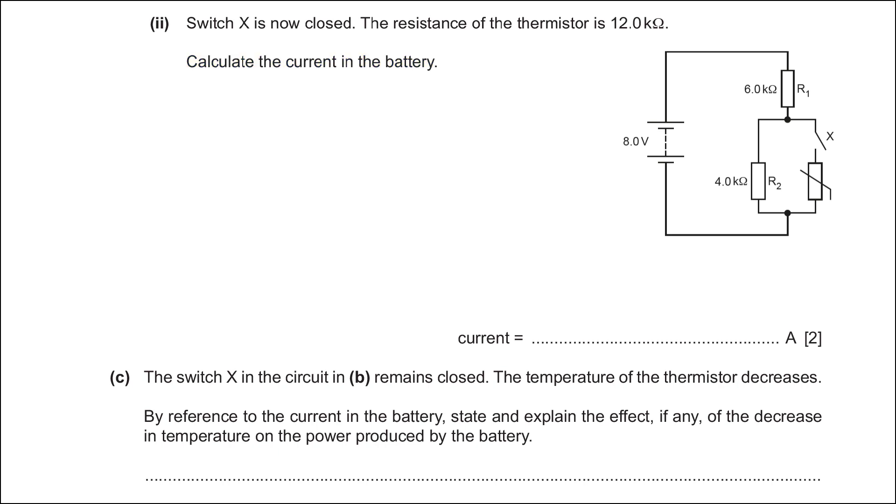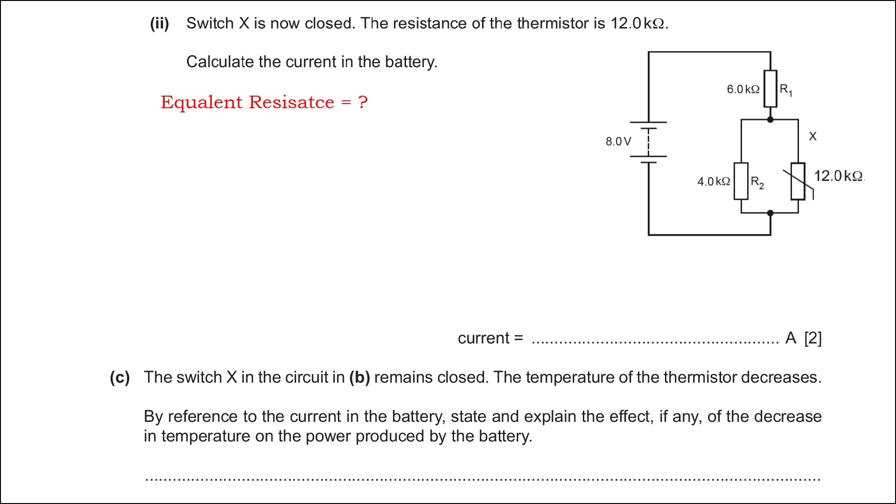When the switch X is closed, then circuit is reduced as shown. To calculate the current, first we have to find the equivalent resistance. Observe that the 12 kilo and 4 kilo resistors are in parallel. Its equivalent resistance would be 3 kOhms.